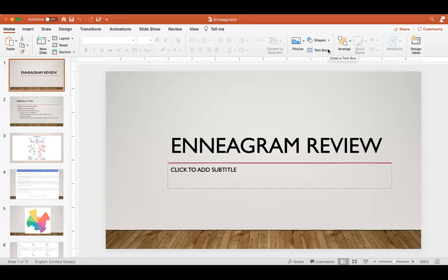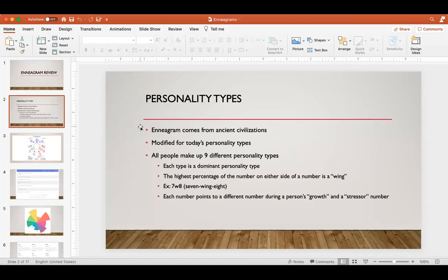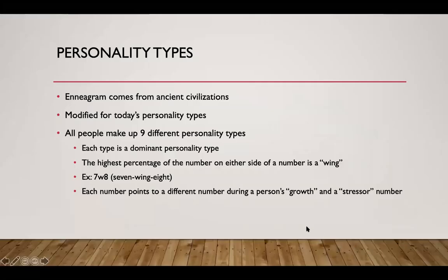The different motivators that drive people and enneagrams and their personality types help you to determine that. Some of this is going to be an eye chart - I cut and pasted it from a website, but you have access to it. There are different ways to interpret this. There are different personality types and people make up nine different personality types, modified a little bit for the 21st century.